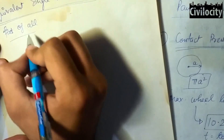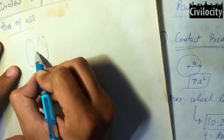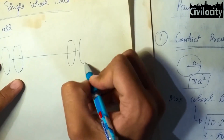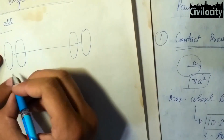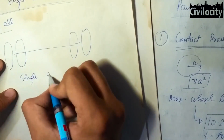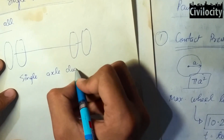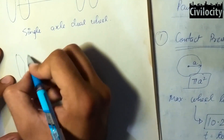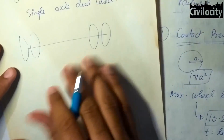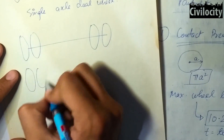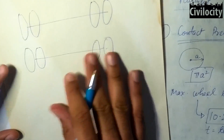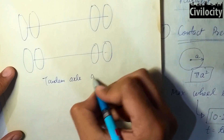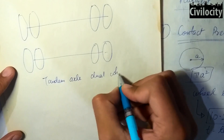Our second topic is equivalent single wheel load (ESWL). First, regarding axles and wheels — there is a dual wheel combination on a single axle, and another combination called tandem axle dual wheels, in which two axles are used with a combination of dual wheels on each side of the axle.